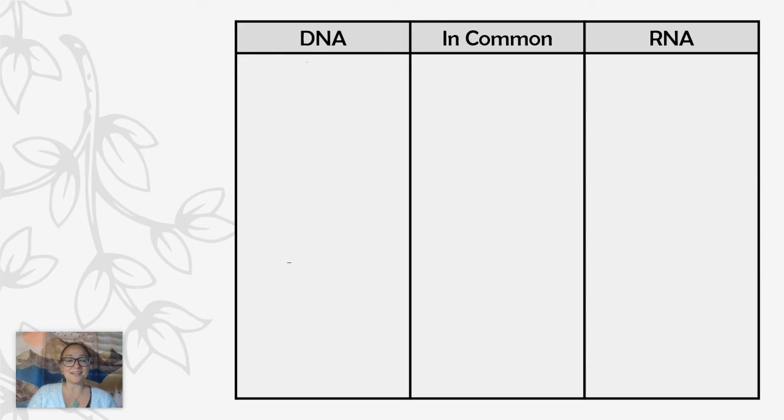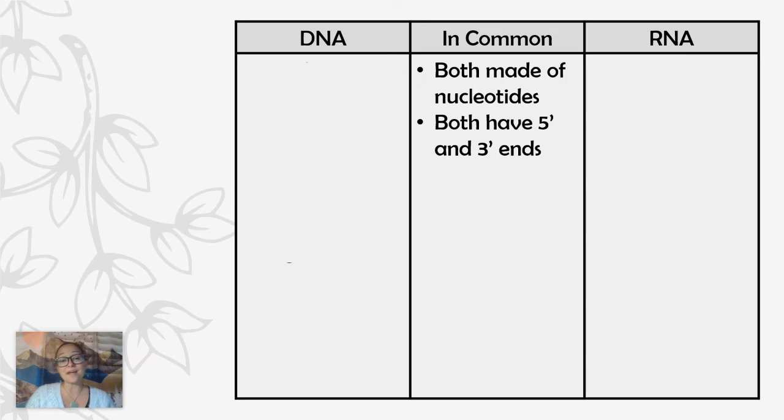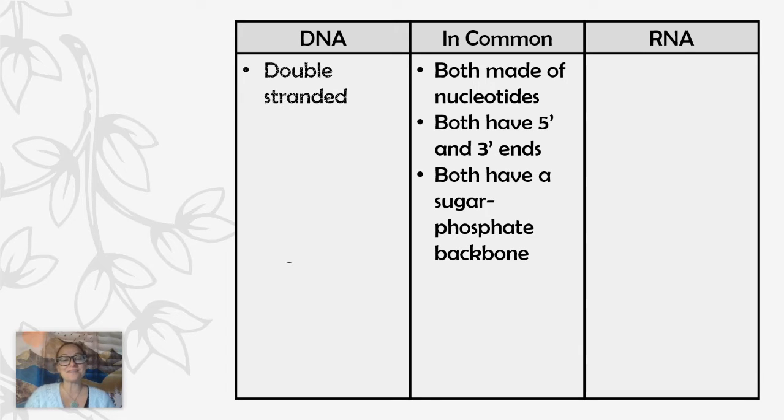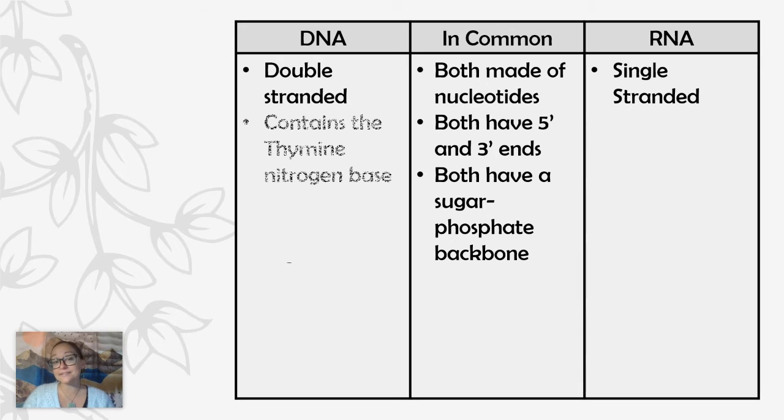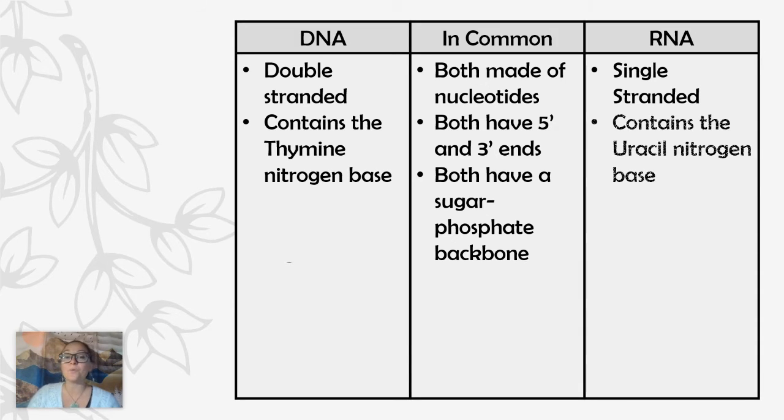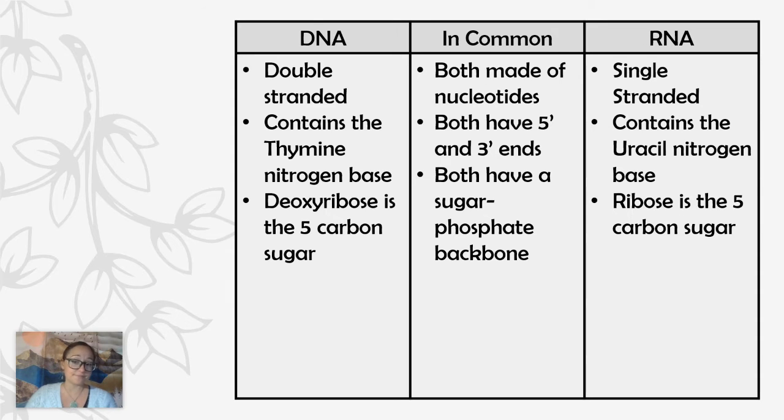Let's go ahead and summarize in a chart for us things they have in common. They're both made of nucleotides. They both have five prime and three prime ends that we'll talk about pretty much the rest of this video and my next video on replication. They both have a sugar phosphate backbone. Now I should also mention, I didn't type it here, but they also have adenine, guanine, and cytosine, A, G, and C, in nitrogen bases. Those are found in both. And DNA is double-stranded while RNA is single-stranded. DNA contains thymine while RNA contains uracil. And the sugar in DNA is deoxyribose, whereas the sugar in RNA is ribose.